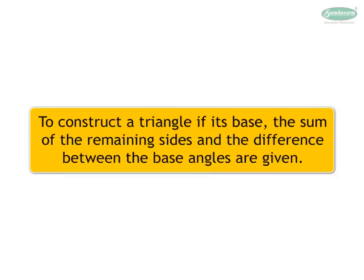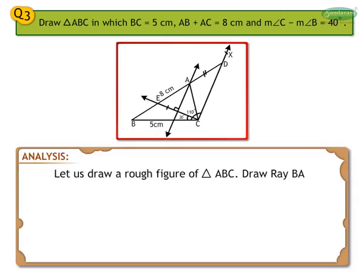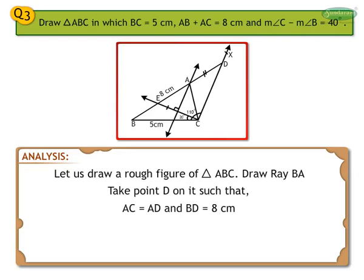Let us now construct a triangle if its base, the sum of the remaining sides, and the difference between the base angles are given. For this, take example 3 of exercise 7.3. Draw triangle ABC in which BC is equal to 5 cm, AB plus AC is equal to 8 cm, and measure angle C minus measure angle B is equal to 40 degrees. Analysis. Let us draw a rough figure of triangle ABC. Draw ray BA.